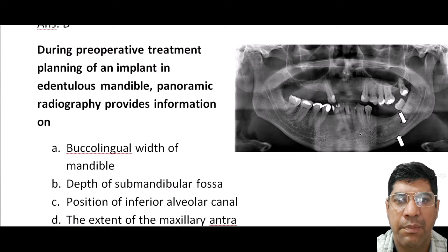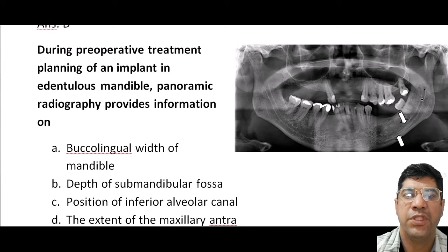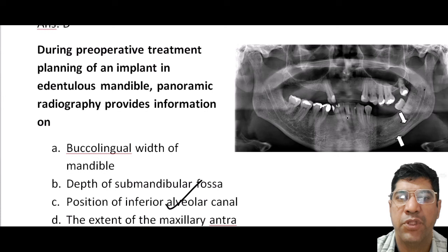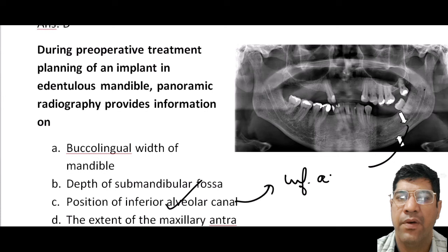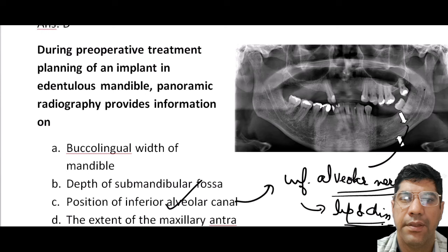During preoperative treatment planning of an implant in an edentulous patient, panoramic radiography provides information on the position of the inferior alveolar canal. This is critical because the position of the inferior alveolar canal determines the location of the inferior alveolar nerve. Avoiding damage to this nerve is essential during implant placement to prevent sensory disturbance in the lip and chin area.